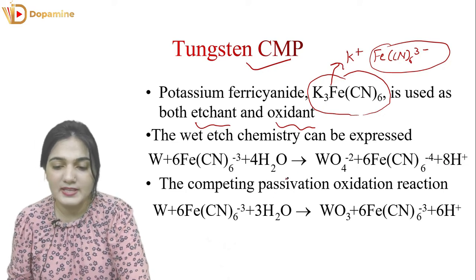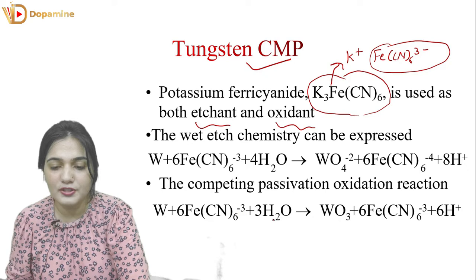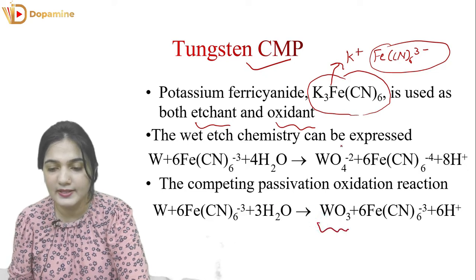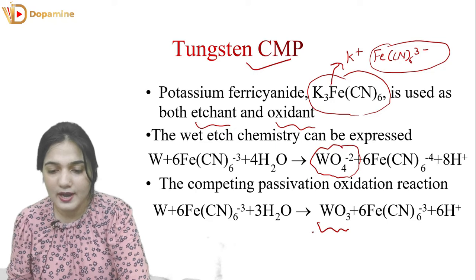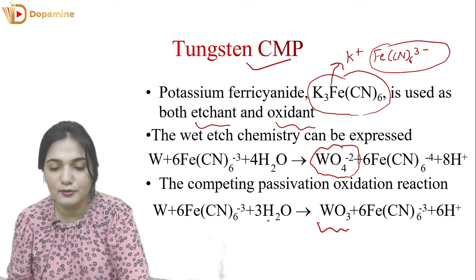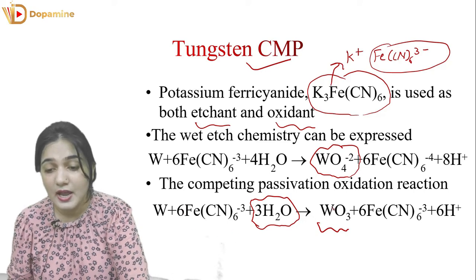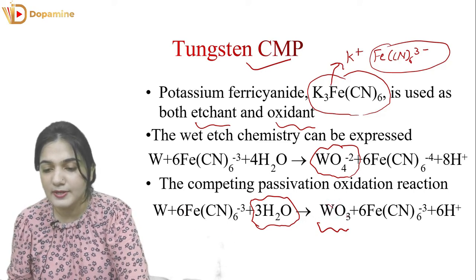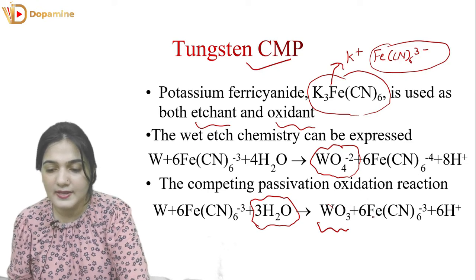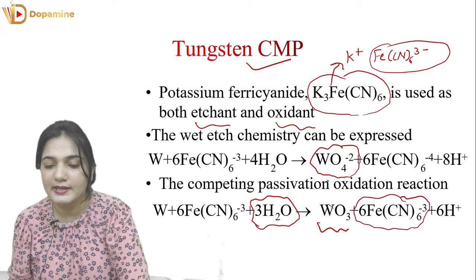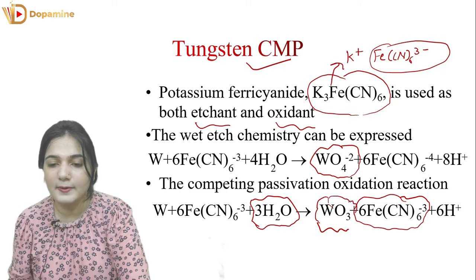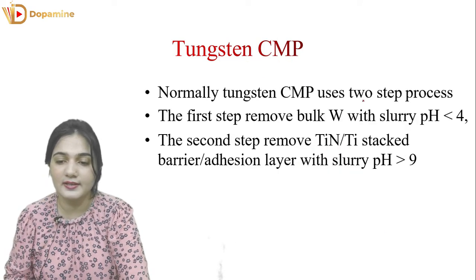After this, there is a passivation-oxidation reaction in which tungsten reacts with 6 Fe(CN)6³⁻ and 3 H₂O to form an oxide. If we control H₂O — three units of water vapor — with tungsten one unit and six units of potassium ferricyanide, tungsten oxide will become WO₃. Then 6 Fe(CN)6⁴⁻ is regenerated once again, and this reacts with tungsten and tungsten oxide — so it is an oxidizing process. This is the tungsten CMP chemistry.